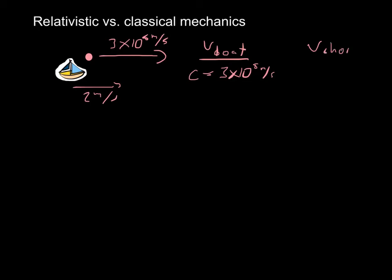Now from the shore, how fast would you measure that light going? Well, if we were going with classical mechanics, you would measure it as being 3 times 10 to the 8th plus 2 meters per second. Turns out that's not right.